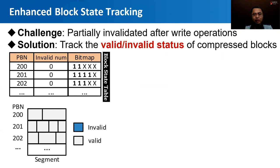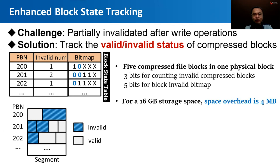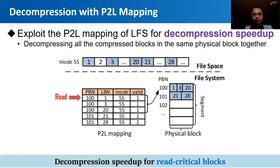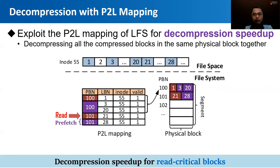The physical block may be partially invalidated after data updates. We adopt a block data table to track the invalid status of compressed blocks. Under foreground compression, the largest number of compressed blocks in a physical block was set to 5, balancing metadata overhead and space reduction. For decompression, the operating system needs file information to reconstruct the file mapping in the page cache. Our design exploits the existing physical-to-logical mapping of LFS to obtain this information. When reading the first file block LBN1, the file system fetches the corresponding physical block PBN100, and by consulting the reverse mapping, can also prefetch and decompress the other two file blocks together, reducing overall decompression time.